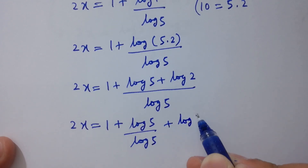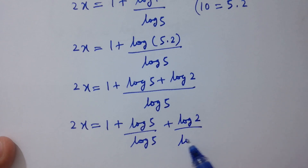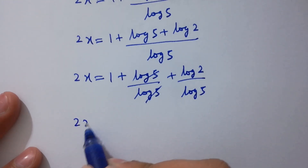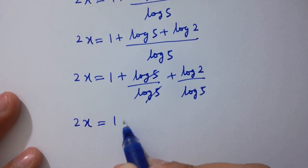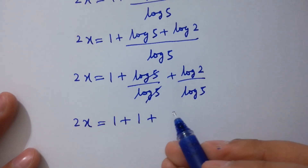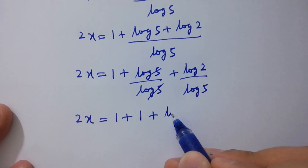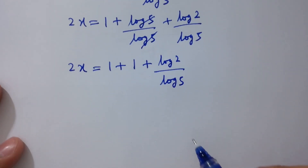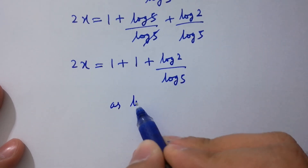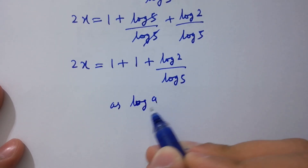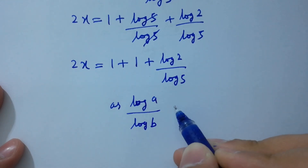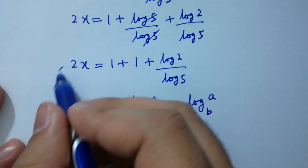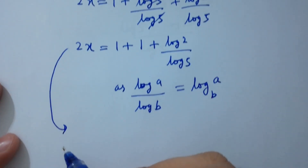Log 5 and log 5 cancel, so 2x equals 1 plus 1 plus log 2 over log 5. Using the change of base rule, log a over log b equals log a to the base b, we get 2x equal to 2 plus log 2 to the base 5.